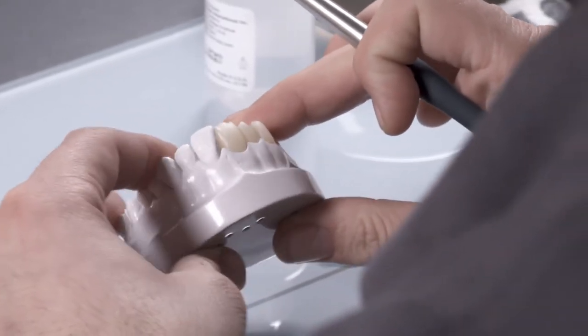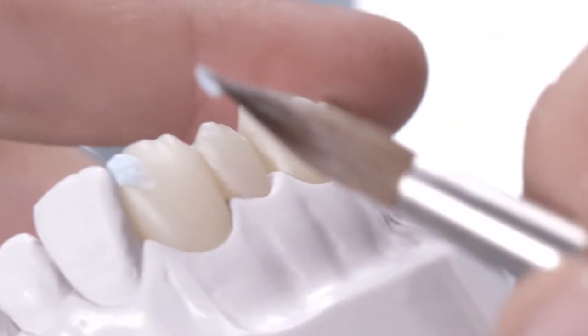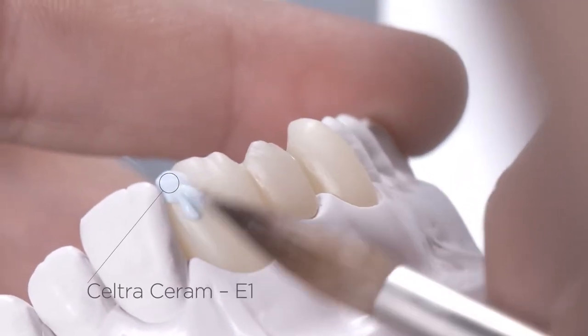Build up the labial and palatal aspects of the enamel layer with Enamel E1 and shape them to obtain their final contours.